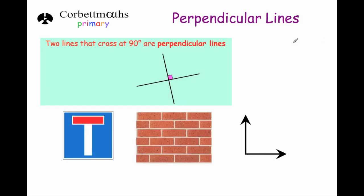Perpendicular lines. Two lines that cross each other at 90 degrees, at a right angle, are called perpendicular lines. As you can see, we've got this line and this line, and this little pink box shows they cross at 90 degrees, so they are perpendicular to each other.